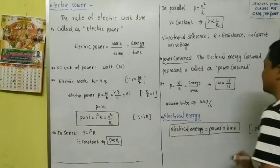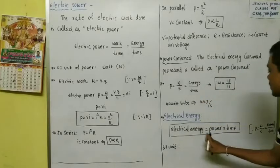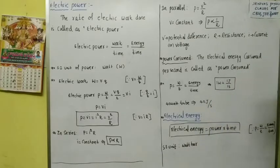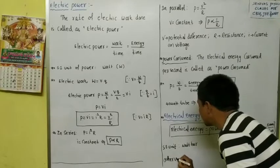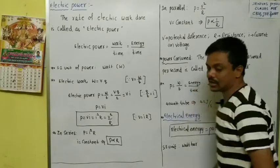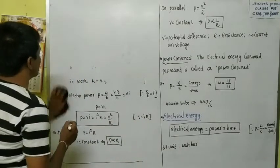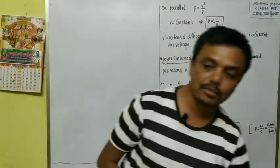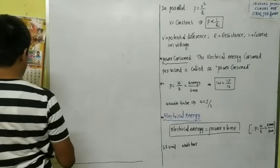What is the SI unit for electrical energy? The SI unit of electrical energy is power into time — watt hour. Sometimes this power can also be expressed in kilowatt hours. The commercial unit of electrical energy is the kilowatt hour. Kilowatt hour is the commercial unit of electrical energy.